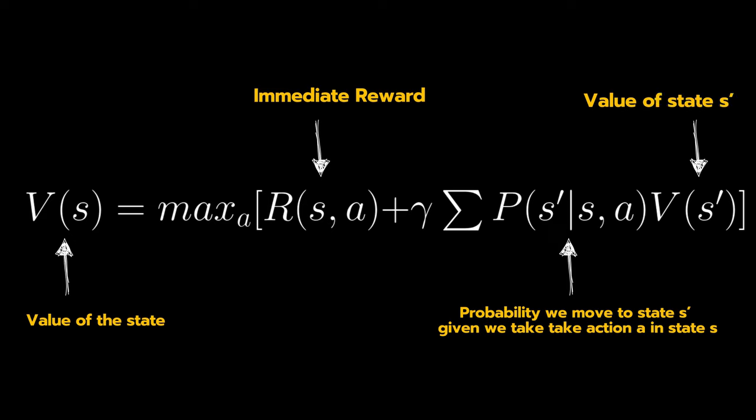If we assume the probability of 1 for moving to a specific next state like we did in the deterministic case, this equation will simplify back to the deterministic Bellman equation.